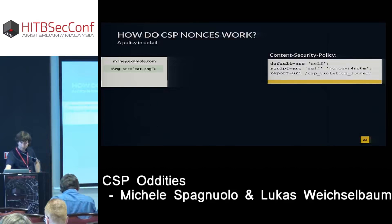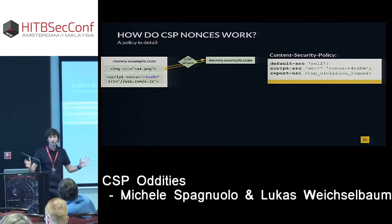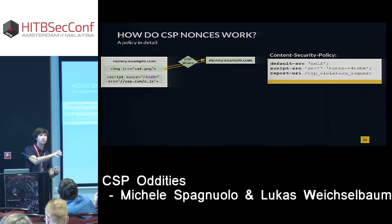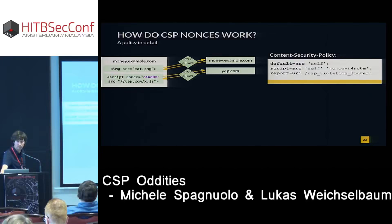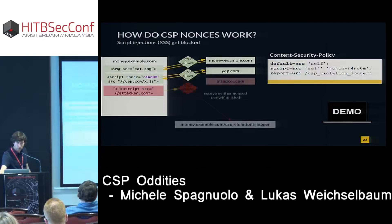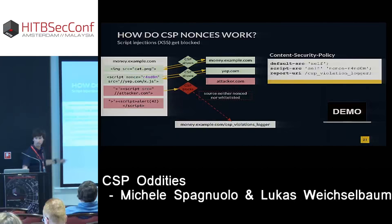With a nonce-based policy, instead of a whitelist, you have 'nonce-[some random string]' — it must be truly random for every response. If the attacker can guess the nonce, he could inject a script with the right nonce and it would execute. A script tag with the correct nonce would execute even if yep.com is not on any whitelist. But a script sourcing attacker.com without the nonce would be blocked, and an injected inline script tag without the nonce wouldn't execute either.